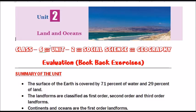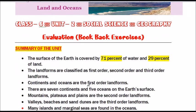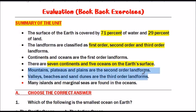Before going into the evaluation, let us have a summary of the unit. The surface of the earth is covered by 71% of water and 29% of land. Landforms are classified as first order, second order and third order landforms. Continents and oceans are the first order landforms. There are seven continents and five oceans on the earth's surface. Mountains, plateaus and plains are the second order landforms.